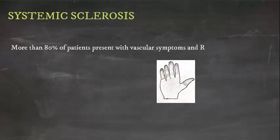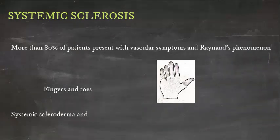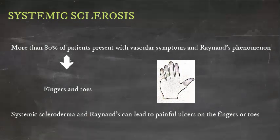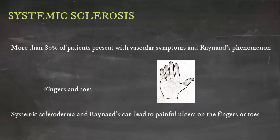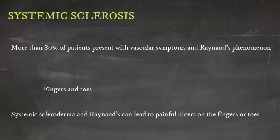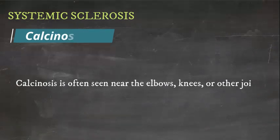More than 80% of patients present with vascular symptoms and Raynaud's phenomenon, which affects the fingers and toes. Systemic scleroderma and Raynaud's can lead to painful ulcers on the fingers or toes. Calcinosis is often seen near the elbows, knees, or other joints.